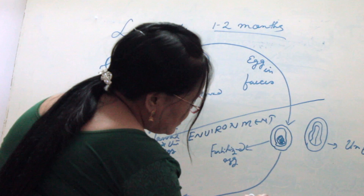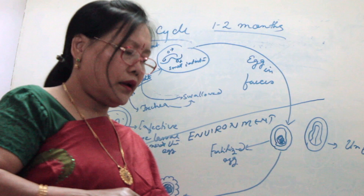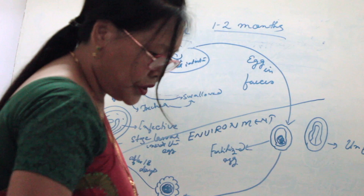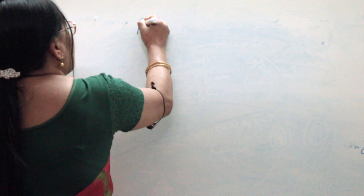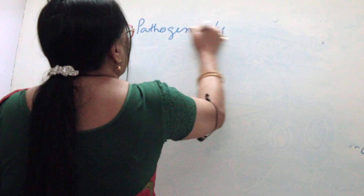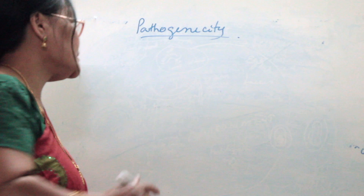In the small intestine, the larva develops into fully developed male and female worms. That is the complete life cycle of Ascaris lumbricoides. The next topic is pathogenicity — pathogenicity means the disease caused by this parasite. The disease caused by this parasite is known as ascariasis.